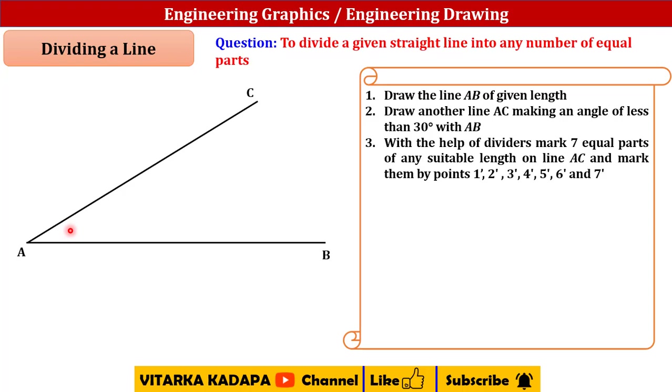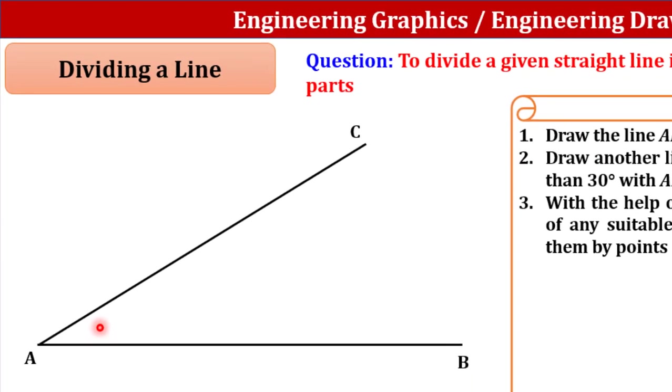For uniform distribution we will consider it as 10 mm length. From A as a center, draw an arc cutting at 1'. From 1' as a center to 2', 2' center 3', 3' center 4', 4' center 5', 5' center 6', 6' to 7'. So seven parts I have divided: 1, 2, 3, 4, 5, 6, 7 parts.